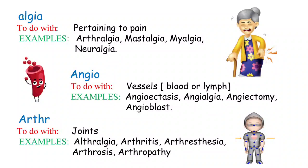The next term is 'angio,' which means vessels — this may be a blood or lymphatic vessel. You can see a cartoon picture of a vessel, and whenever you hear 'angio,' that picture should come to mind. Examples include angioectasis — dilation of a blood vessel; angialgia — pain in the blood vessel; angiectomy — surgery to remove a part of a blood vessel; and angioblast — embryonic tissue from which blood vessels arise.